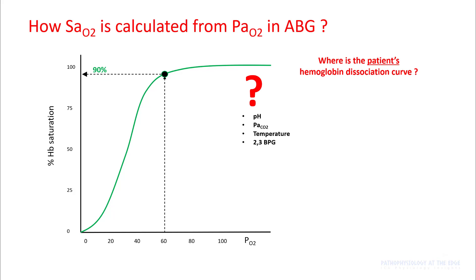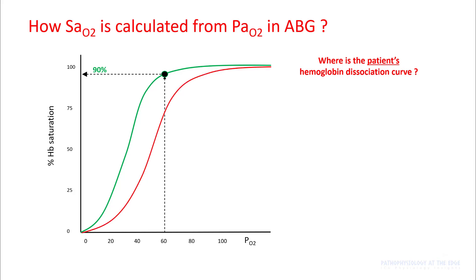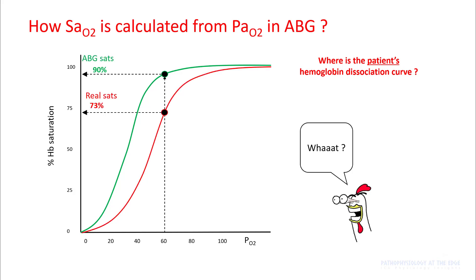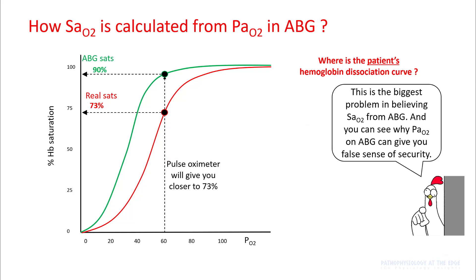The problem is that your patient's hemoglobin dissociation curve may not be the same as the standard curve, because it is affected by your pH, PaCO2, temperature, and level of 2,3-BPG. So if your hemoglobin saturation curve is shifted (shown as the red line), the real SaO2 will be 73% while the ABG SaO2 will show you 90%. In these cases, pulse oximetry will give you a much closer approximation to the real number. This is one of the biggest limitations of believing SaO2 from an ABG.